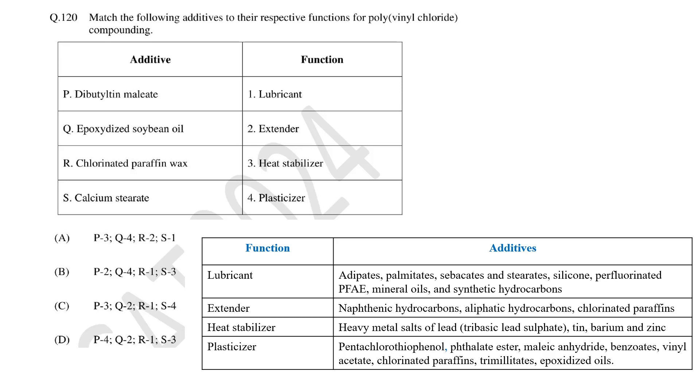Extenders are secondary plasticizers. They are commonly added with primary plasticizers to reduce cost in general purpose flexible PVC. Examples of extenders are naphthenic hydrocarbon, chlorinated paraffin, aliphatic hydrocarbon, chlorinated paraffins and others. Heat stabilizers are used to prevent degradation of PVC by heat especially during processing. Heat stabilizers act by stopping thermal oxidation. Heavy metal salts of lead, tin, barium and zinc are used as heat stabilizers.